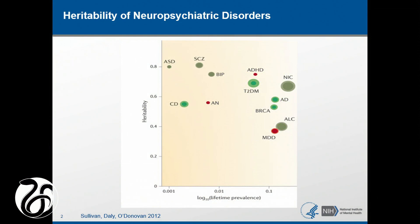Even before we were able to measure genetic variation across the genome, from family and twin studies we know that mental disorders are heritable and they have quite a bit of heritability. The x-axis here is the prevalence and the y-axis is the heritability of a particular disorder. This plots mental disorders versus other common diseases. You can see that schizophrenia and bipolar have high heritability. So before we knew anything about the molecular pathophysiology or biology, we already knew that there are biological genetic components that contribute to disease.